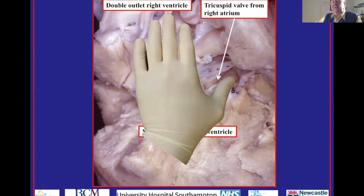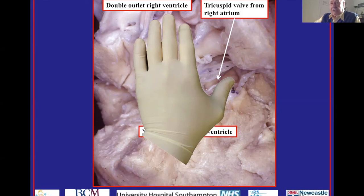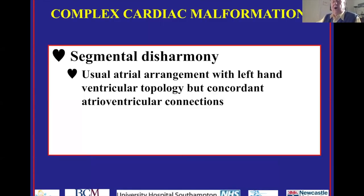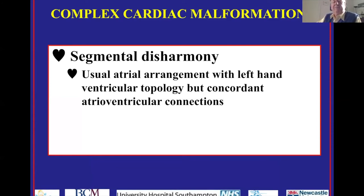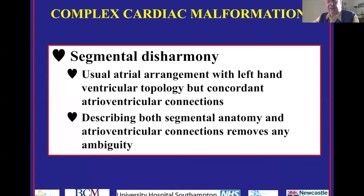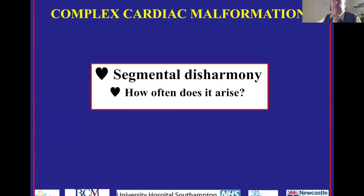This is one of those very rare cases of segmental disharmony. In Van Praag terminology this would be S-D — and then D double outlet right ventricle — and you would presume discordant atrioventricular connections, but in fact there are concordant atrioventricular connections. For us, using connections, it doesn't matter: we simply say usual atrial arrangement, concordant atrioventricular connections with left-handed topology, removing the ambiguity.